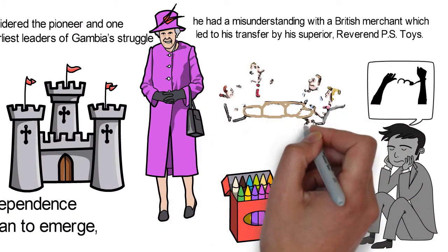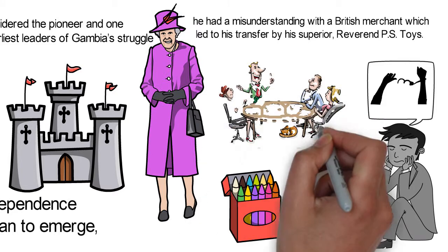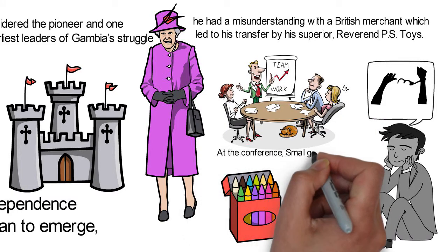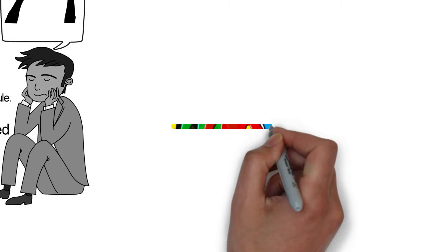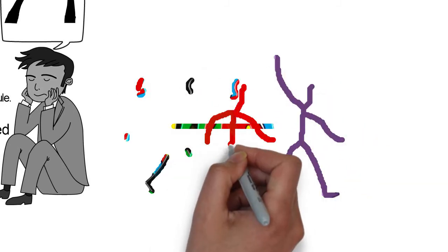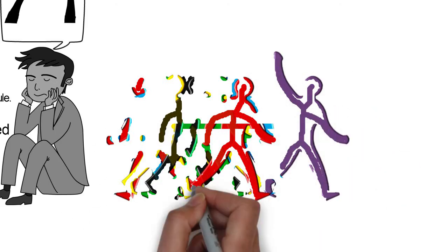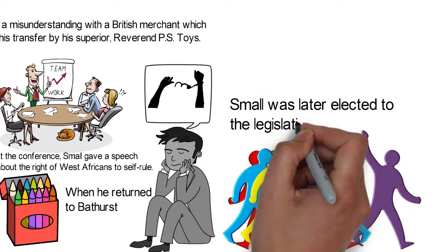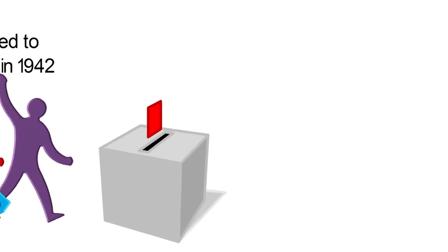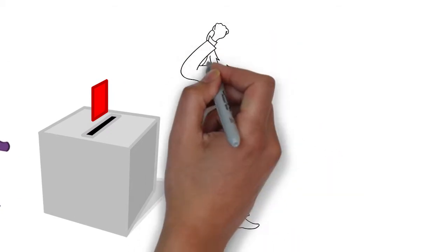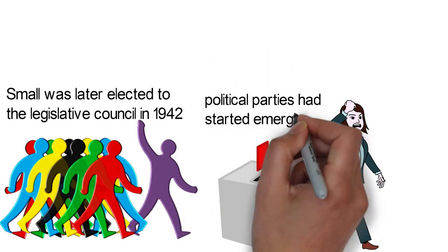In 1920, Small participated in a conference in the Gold Coast organized by the National Congress of British West Africa (NCBWA). At the conference, Small gave a speech about the right of West Africans to self-rule. When he returned to Bathurst, Small set up the Gambia chapter of the NCBWA. He was instrumental in staging the first labor walkout in Gambia later in 1928. Small was later elected to the Legislative Council in 1942 and became the first person to win a popular vote in Gambia. By the time of his death in 1958, he had inspired other Gambians to aspire for self-rule and political parties had started emerging.